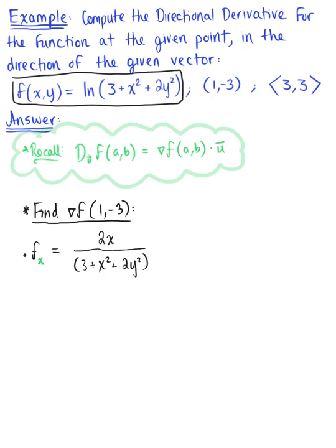Similarly, we need the partial derivative of this function with respect to y. Since we're differentiating with respect to y, we treat x like a constant. So here we are left with 4y all divided by 3 plus x squared plus 2y squared. So we now have both partial derivatives.